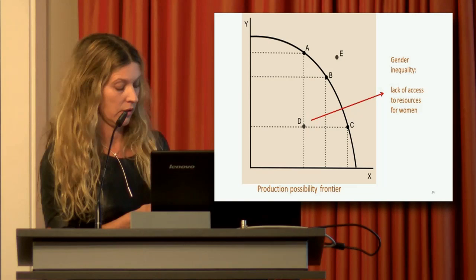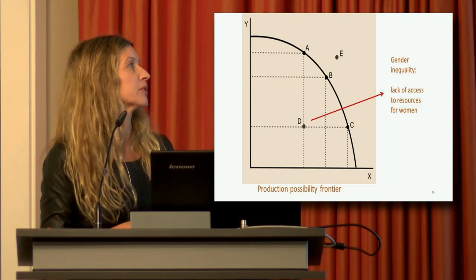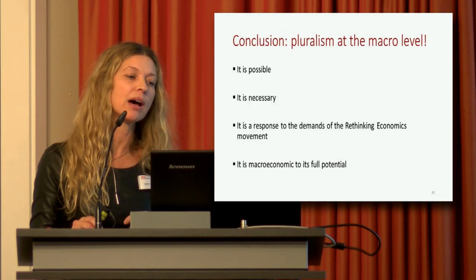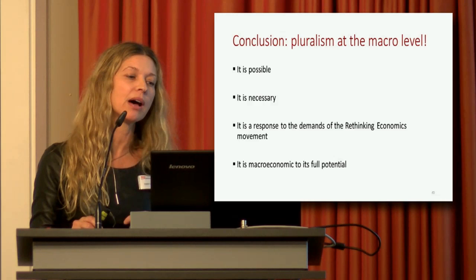My conclusion: why do we need pluralism at the macro level? I think it is possible. It is necessary. And it's a response to the demand of the rethinking economics movement — bringing macroeconomics to its full potential. Thank you.